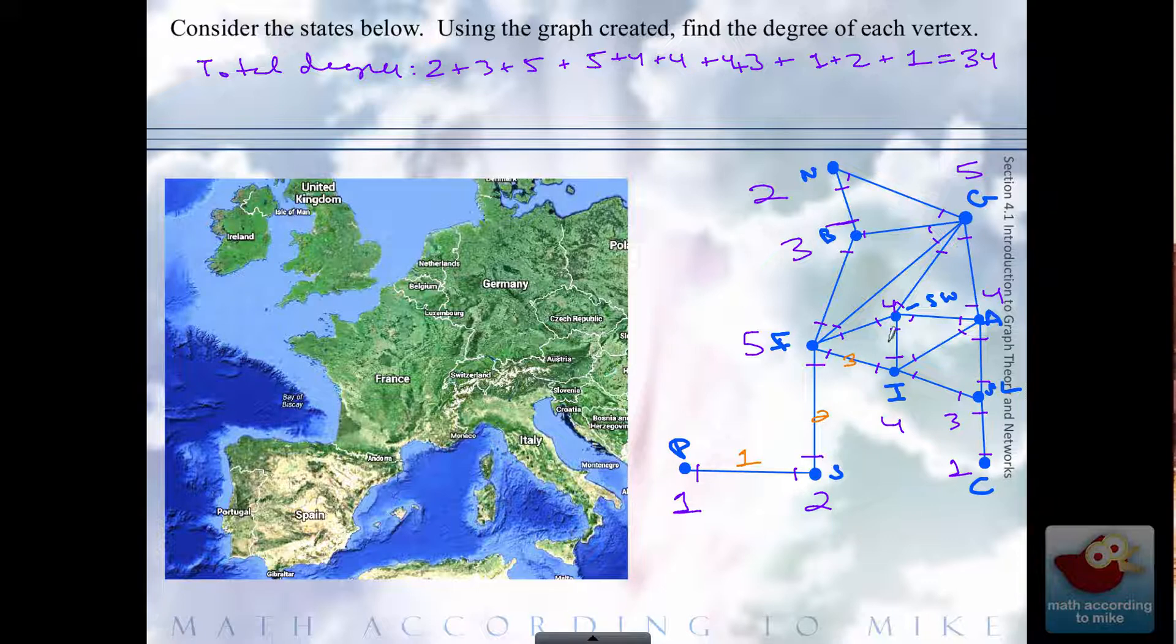We got one, two... doesn't matter the order we count them as long as we get it in... three, four, five, six, seven, eight, nine, ten, eleven, twelve, thirteen. Well that's a three, I promise. Fourteen, fifteen, sixteen, seventeen. Seventeen edges.